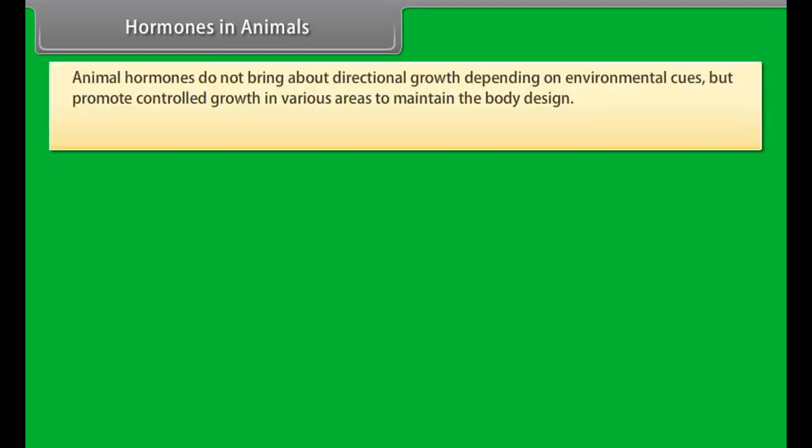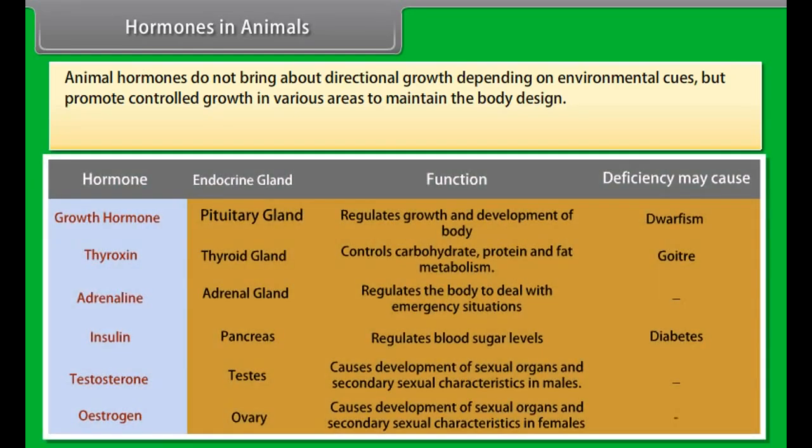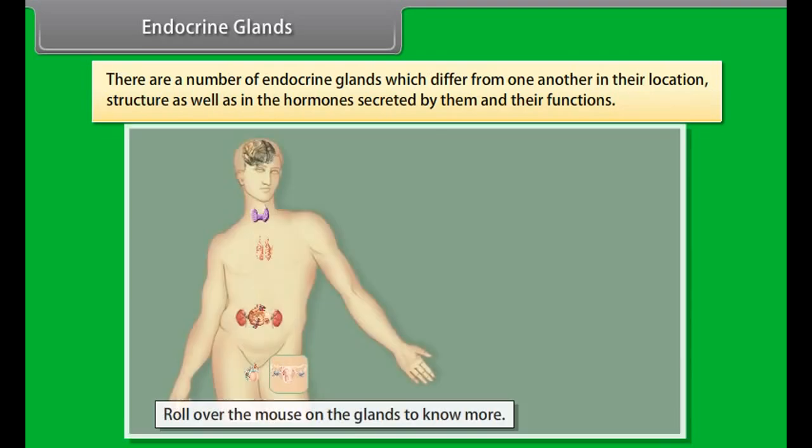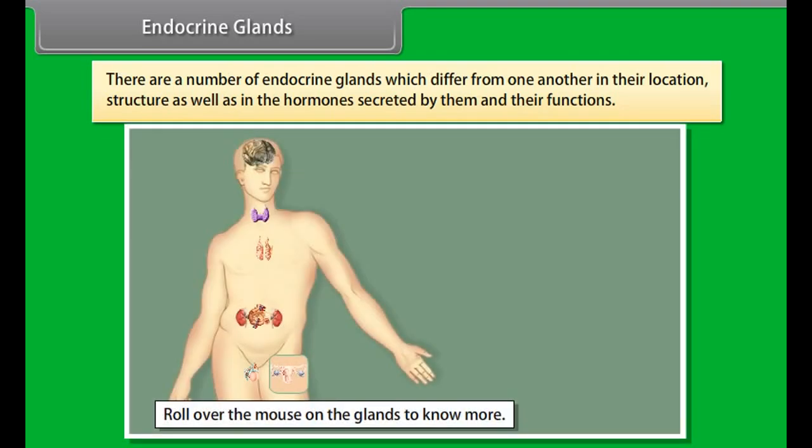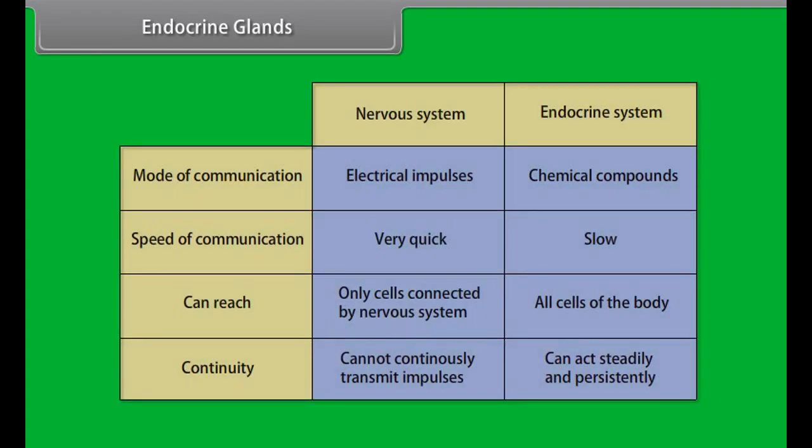Endocrine glands: There are a number of endocrine glands which differ from one another in their location, structure as well as in the hormones secreted by them and their functions. Endocrine system is formed of a number of endocrine glands and control and coordinates the body functions through their specific chemical secretions called hormones.